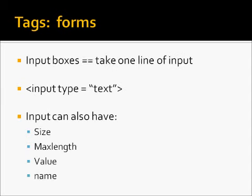Input boxes only take one line of input. It doesn't normally matter how long the line is, but that's all they can take. To get an input into your particular form, you would use the input type equals text tag. Inputs can have the following modifiers or properties: size, which denotes how long the actual typing area is; max length, which denotes how long the actual length of the input is; value, which is what might be shown to the user upon first use of the form; and name, which is our internal name for that specific input box.